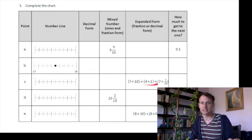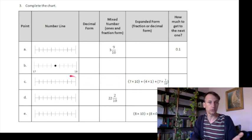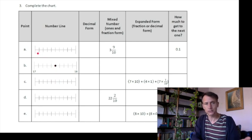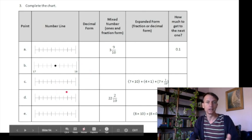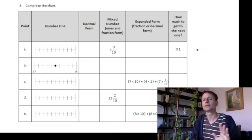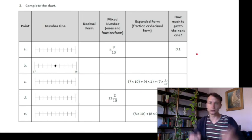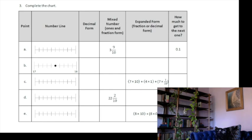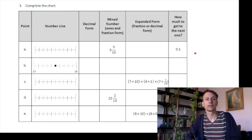When the expanded fraction form is given, write the mixed number first, then the decimal, then plot it on the number line. Remember to label the ends of the number line — for example, three and nine-tenths is between three and four, so label those endpoints. There's a lot to do, so be patient. If you need a break, go for a walk, look out the window, make some tea, then come back and get back to work.